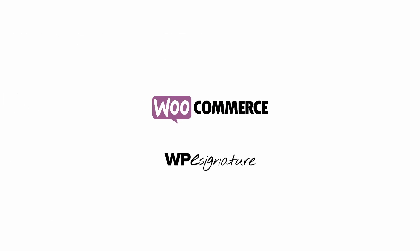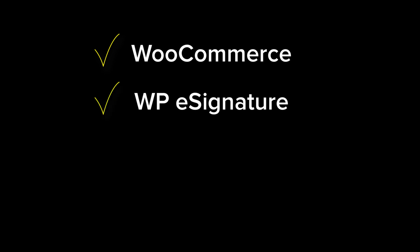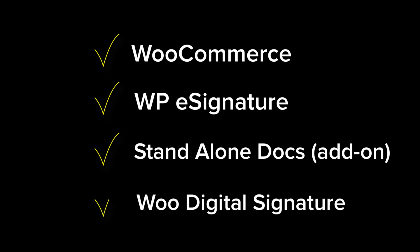In order to automate the digital signature process, we'll need the following plugins installed: WooCommerce by WooThemes, WP eSignature by ApproveMe, the standalone document add-on which comes with the ApproveMe business license, and of course the free digital signature WooCommerce add-on.